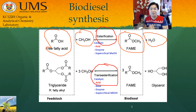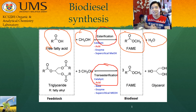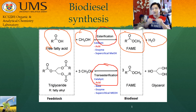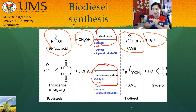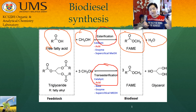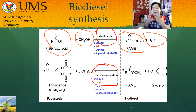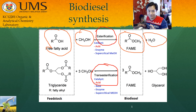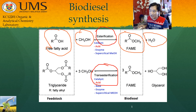This esterification reaction can be catalyzed by three catalysts: number one is acid, number two is enzyme, and number three is supercritical methanol. Supercritical methanol is not technically a catalyst but a process condition. Remember your thermodynamics — supercritical is a state where solid, gas, and liquid are not distinguishable, occurring at certain high pressure and high temperature.